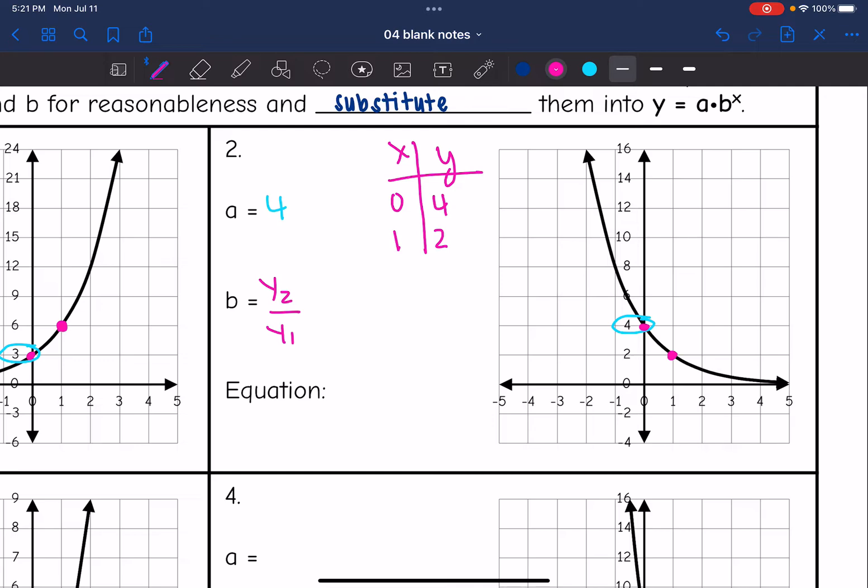So that means 4 would be y1, and 2 would be y2. And I'm going to do 2 over 4 to get the common ratio. It simplifies to 1 half. So I get the equation y equals 4 times 1 half to the x.